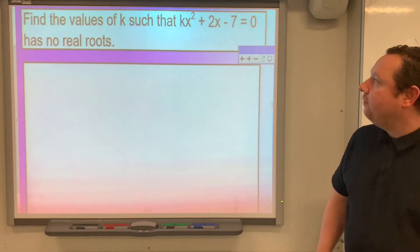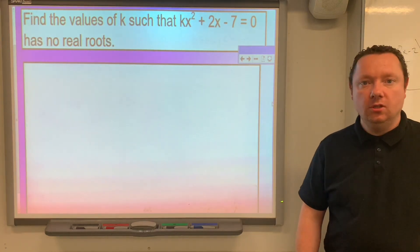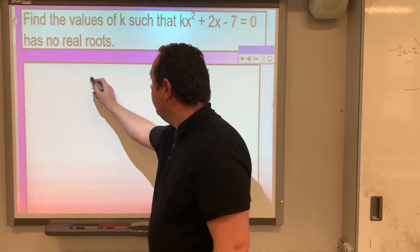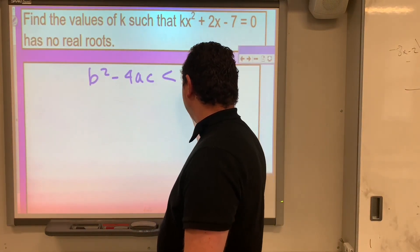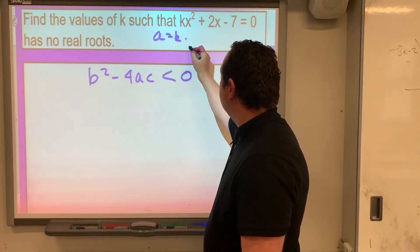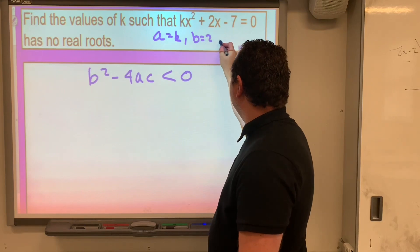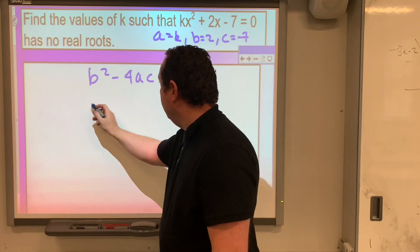Example 2: find the values of k such that kx squared plus 2x take away 7 equals 0 has no real roots. So if it has no real roots, b squared minus 4ac must be strictly less than 0. In this case, a equals k, b equals 2, c equals negative 7.